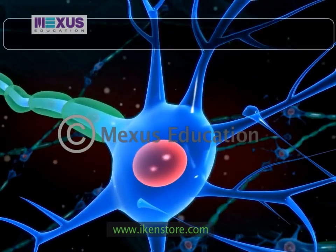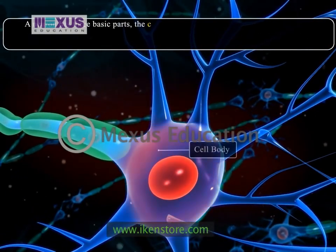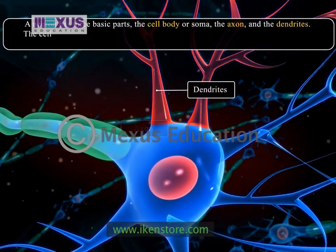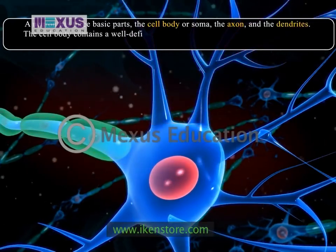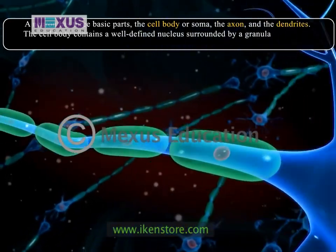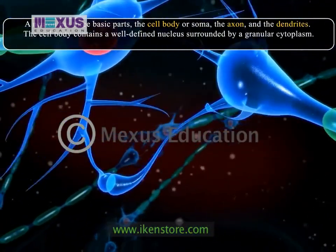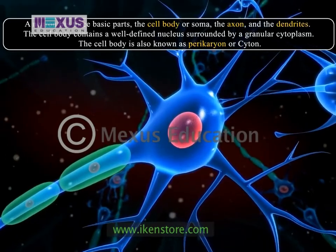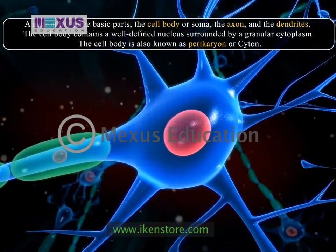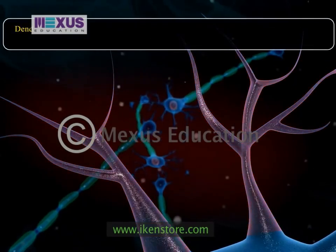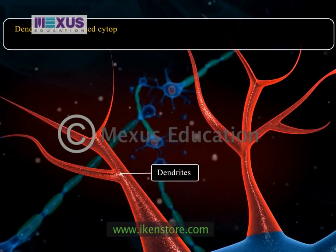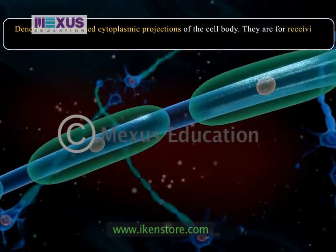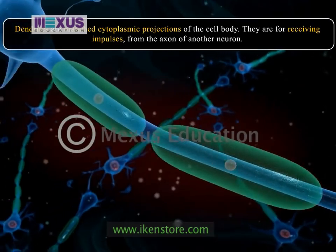A neuron has three basic parts: the cell body, the axon, and the dendrites. The cell body contains a well-defined nucleus surrounded by a granular cytoplasm. The cell body is also known as pericarion or cyton. Dendrites are branched cytoplasmic projections of the cell body; they are for receiving impulses from the axon of another neuron.